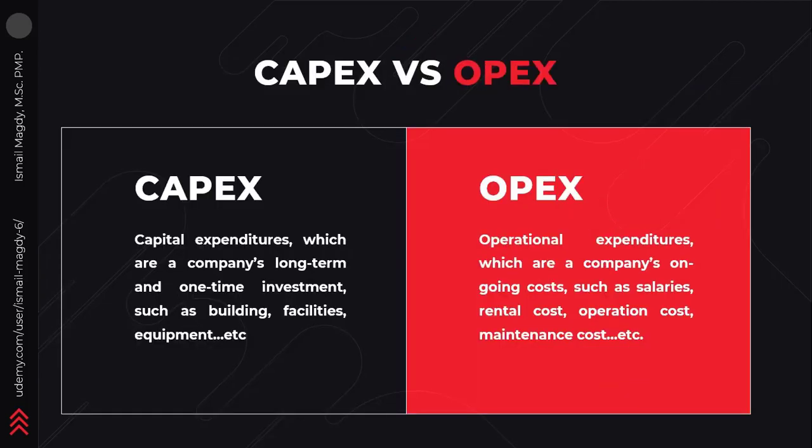Any asset goes through a certain life cycle inside any organization. This life cycle could be divided into two main parts, which are called CAPEX and OPEX.